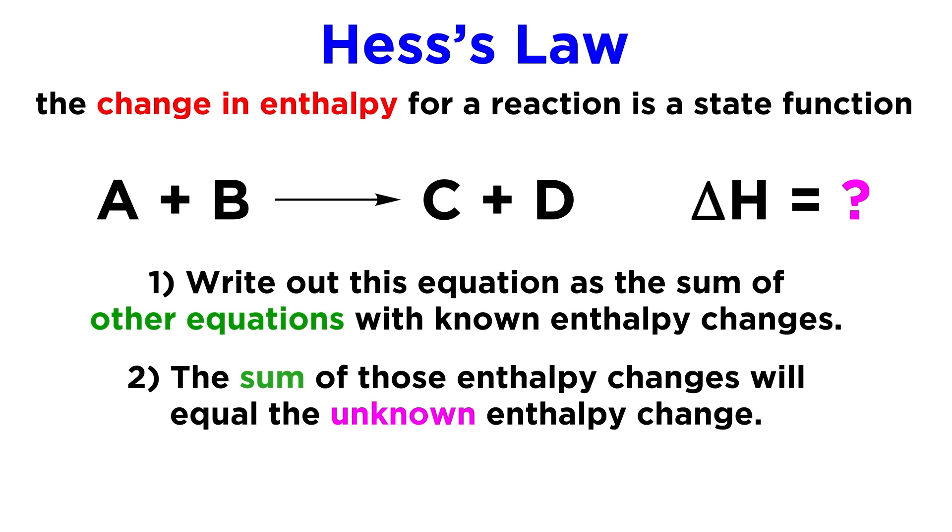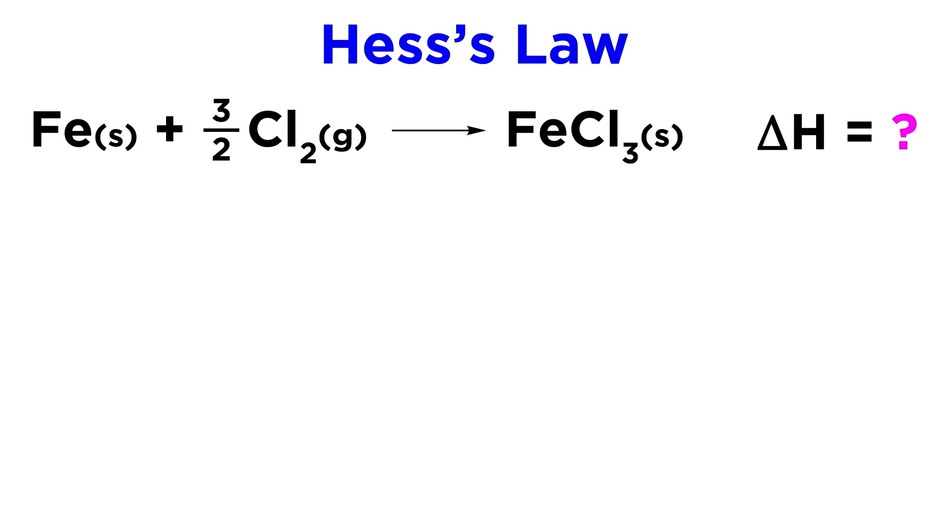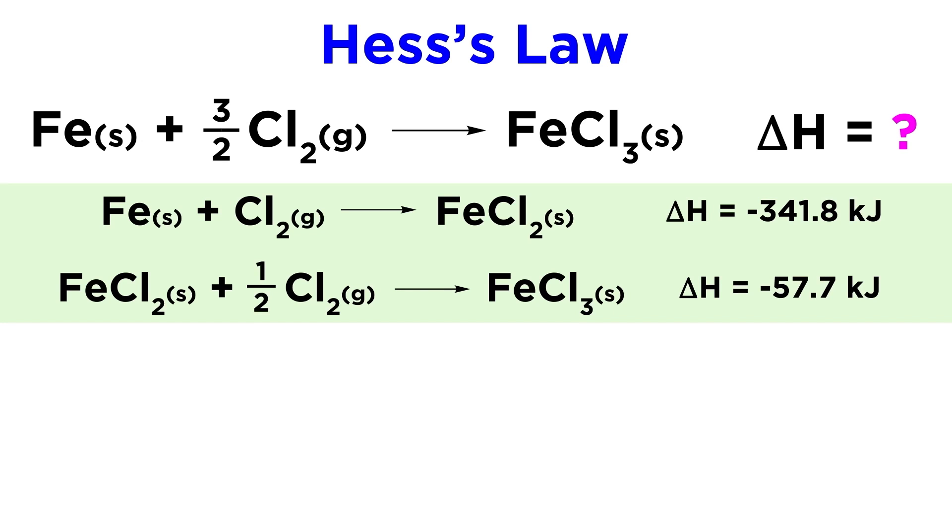This concept is best demonstrated by example, so let's see what this means. Let's say we want to know the enthalpy of formation for FeCl3, which means the energy associated with the generation of one mole of this compound from its constituent elements, but we only have the following enthalpy data, which tells us the enthalpy of forming FeCl2, which then forms FeCl3.